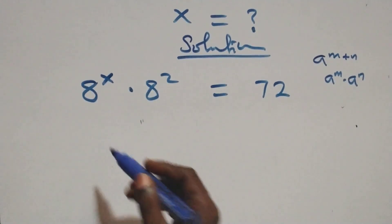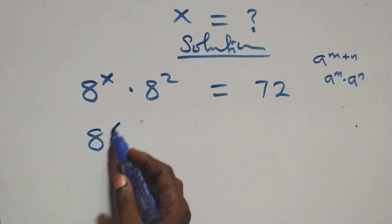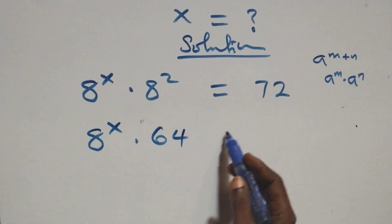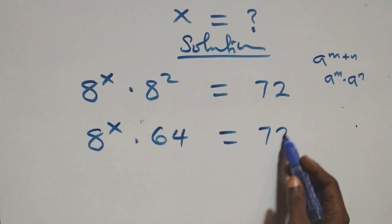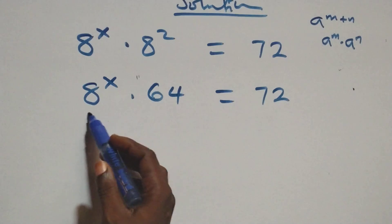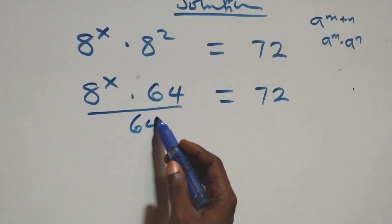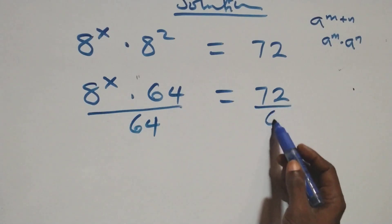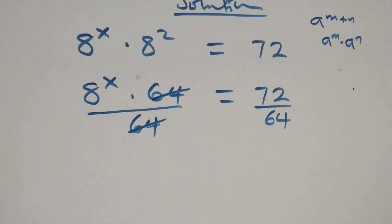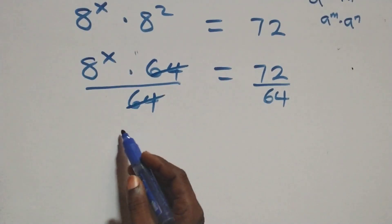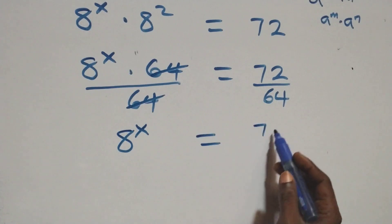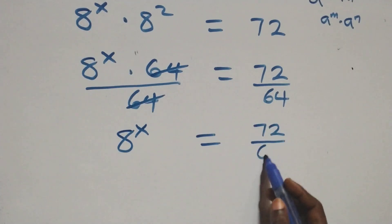Next, we have 8 raised to power x times 8 squared, and 8 times 8 is 64, so this equals 72. We then divide both sides by 64 — divide this side by 64 and also divide that side by 64. The 64s cancel each other, leaving 8 raised to power x equals 72 over 64.